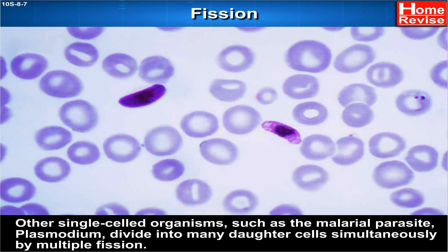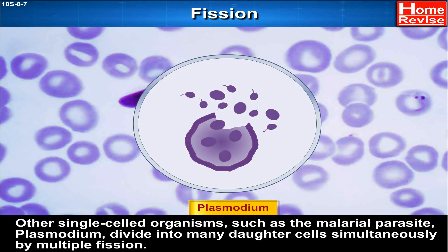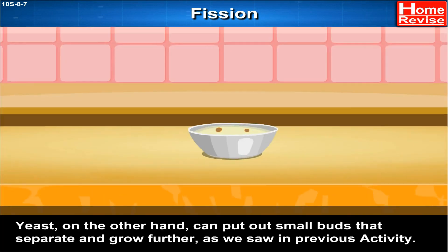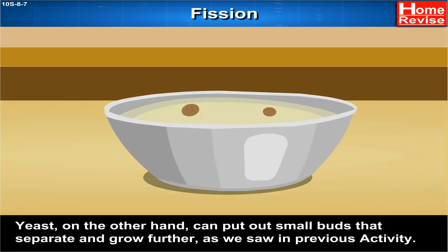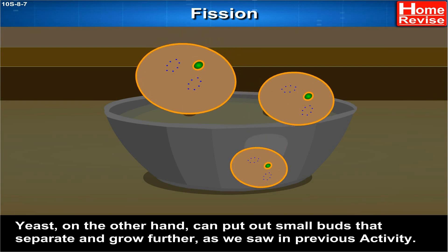Other single-celled organisms such as the malarial parasite Plasmodium divide into many daughter cells simultaneously by multiple fission. Yeast, on the other hand, can put out small buds that separate and grow further, as we saw in a previous activity.